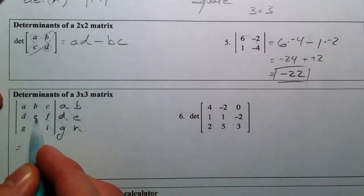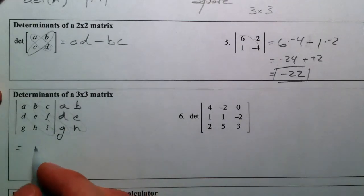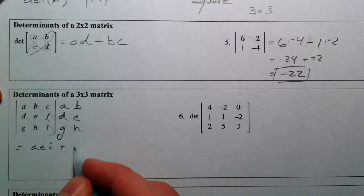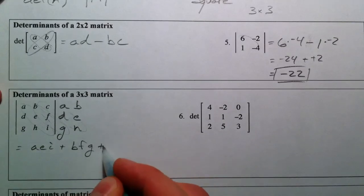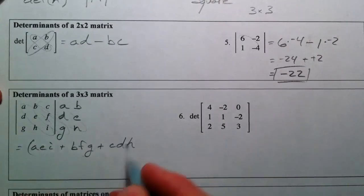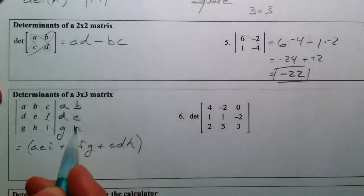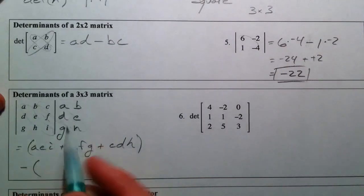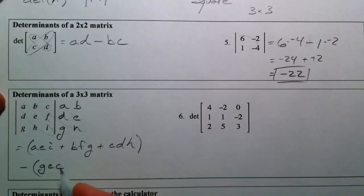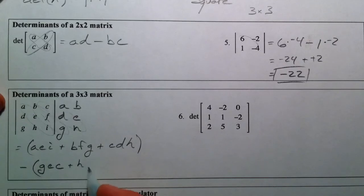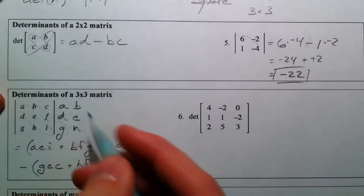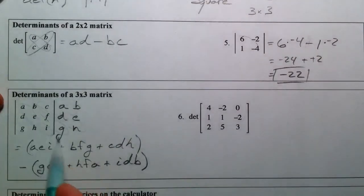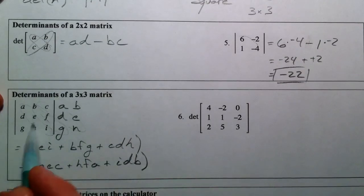So you have A, E, and I — multiply down the diagonals and add up all those parts. And then we subtract multiplying up the diagonals: G, E, C, plus H, F, A, plus I, D, B. And there we have them multiplying up the diagonals. So the down diagonals — add them together — subtract the up diagonals.